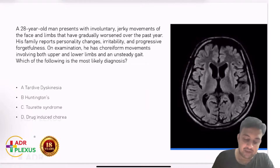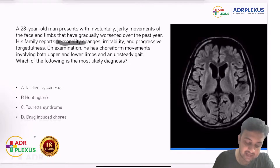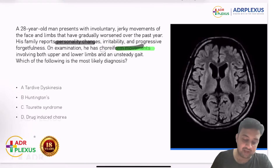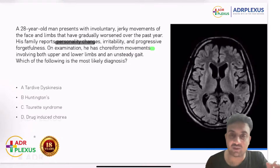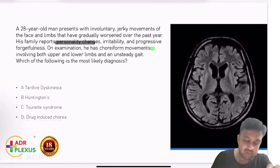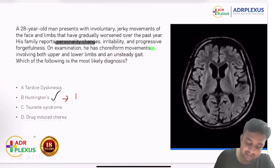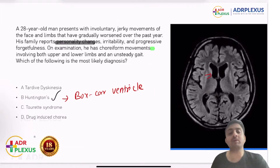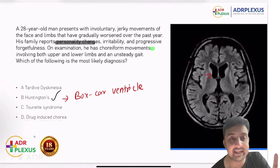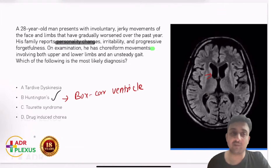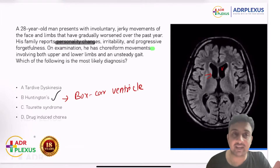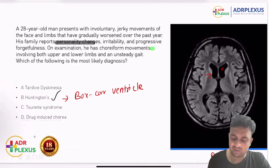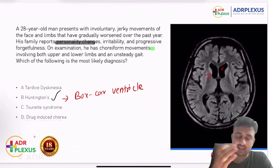A tricky question: a patient with personality changes and choriform movements — chorea. An important cause for exams is Huntington's chorea. When given an MRI image, the classical sign to identify is boxcar ventricles — the ventricles appear vertical with a boxcar-like appearance. Boxcar ventricles is the sign seen in Huntington's chorea. This is a previous year question topic that has been discussed in multiple sessions.